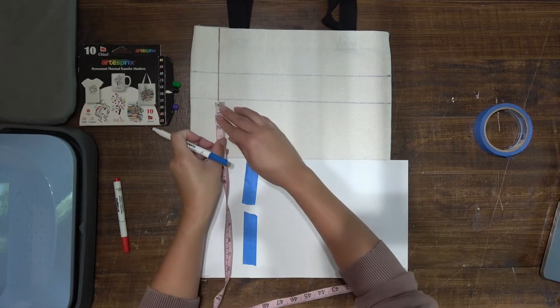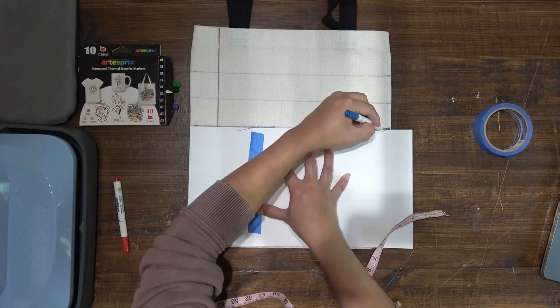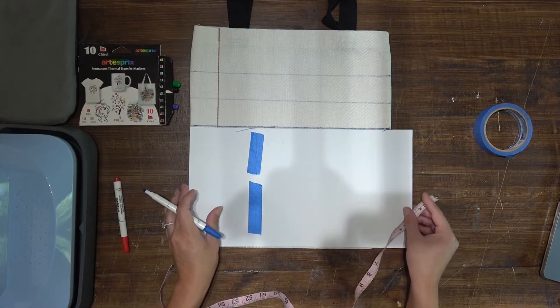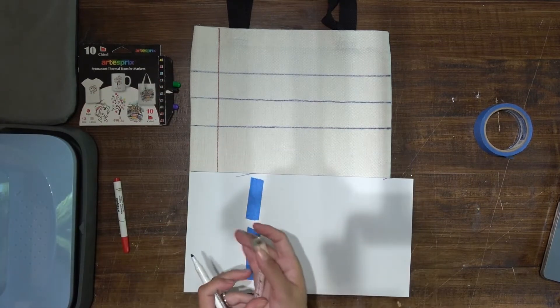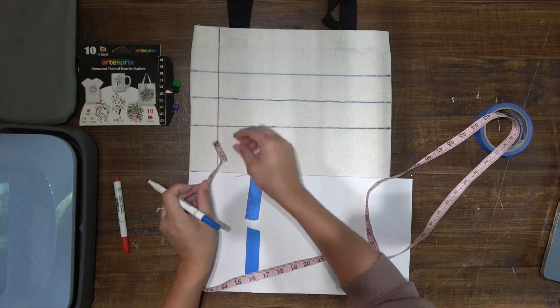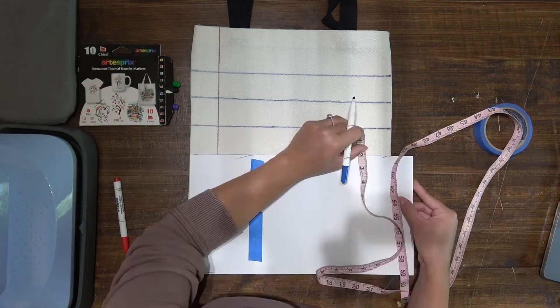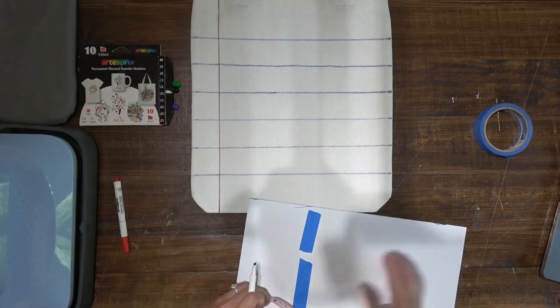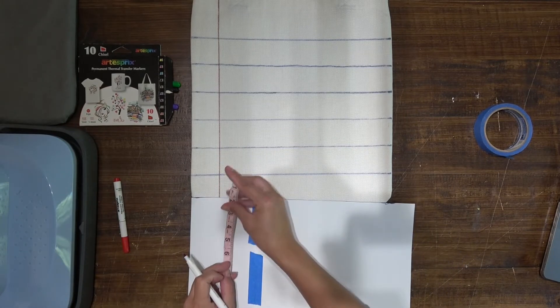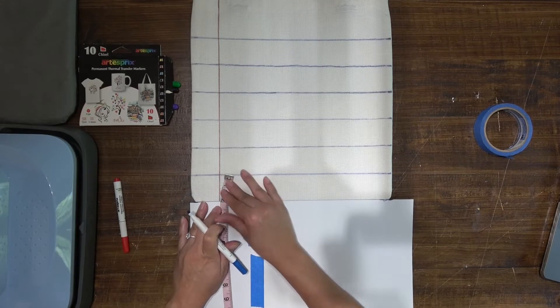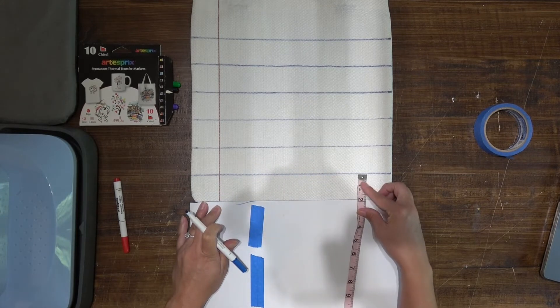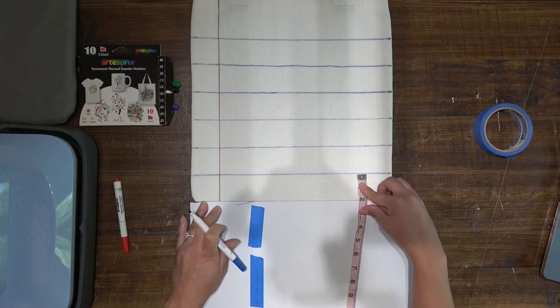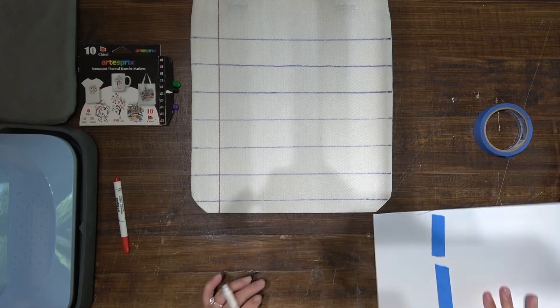And drop it down another two inches. There we go. Oh, it's turning out so cute already. We'll just do another two inches. All right. And do we have enough room to do one more line? Oh, we do just barely. I'm going to do one more line just because it will probably drive me crazy if I don't add that extra line in there. There we go.